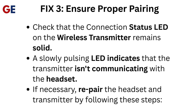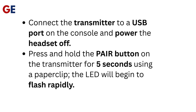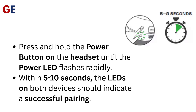If necessary, repair the headset and transmitter by following these steps. Connect the transmitter to a USB port on the console and power the headset off. Press and hold the pair button on the transmitter for 5 seconds using a paperclip. The LED will begin to flash rapidly. Press and hold the power button on the headset until the power LED flashes rapidly. Within 5 to 10 seconds, the LEDs on both devices should indicate a successful pairing.